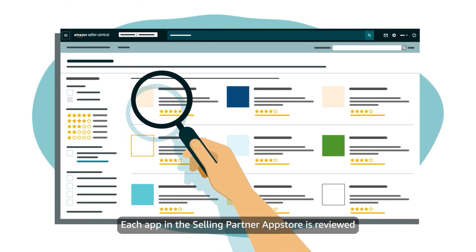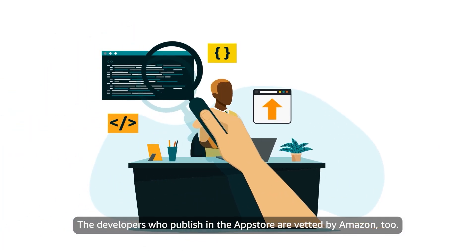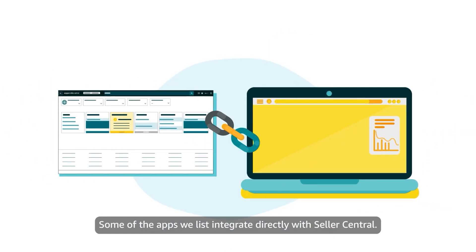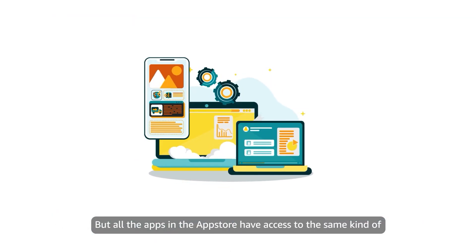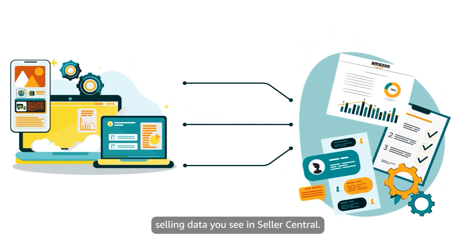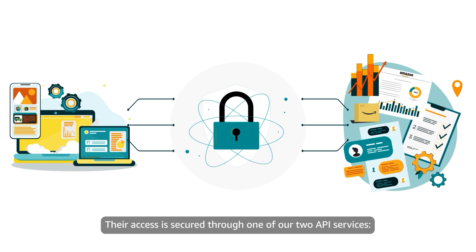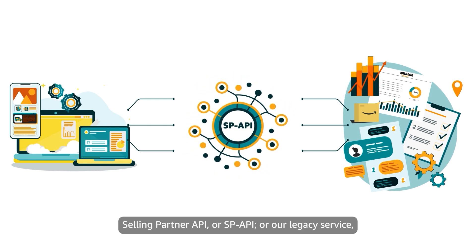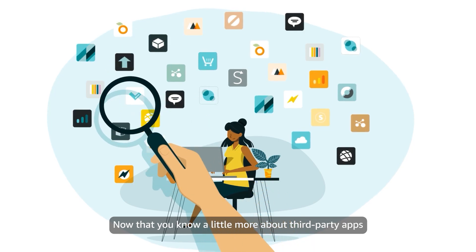Each app in the Selling Partner App Store is reviewed and authorized by Amazon. The developers who publish in the App Store are vetted by Amazon, too. Some of the apps we list integrate directly with Seller Central; others are standalone. But all the apps in the App Store have access to the same kind of selling data you see in Seller Central. Their access is secured through one of our two API services — Selling Partner API, or SP-API — or our legacy service, Marketplace Web Service, also called Amazon MWS.